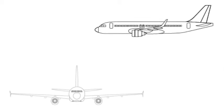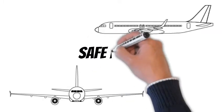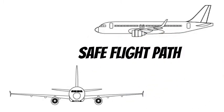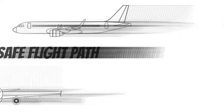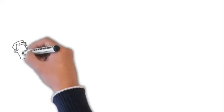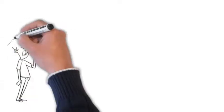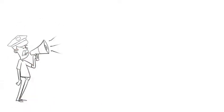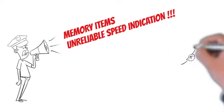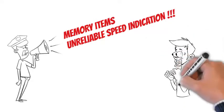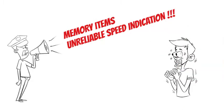Memory items: The flight crew must ensure a safe flight path. If the safe conduct of the flight is affected, the flight crew applies the memory items. The memory items enable a rapid establishment of safe flight conditions for a limited period of time, in all phases of flight and in all aircraft configurations — weight and slats/flaps.